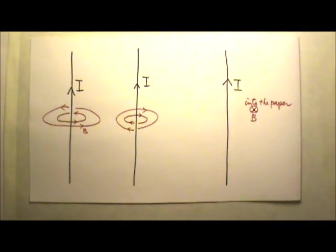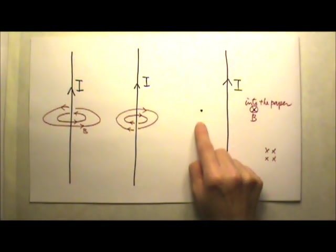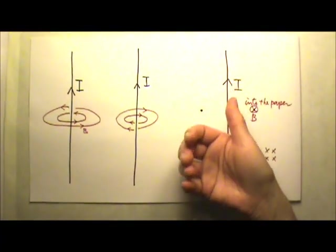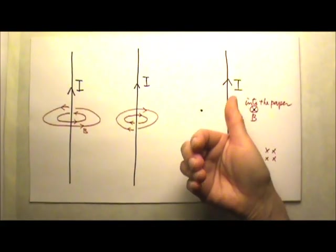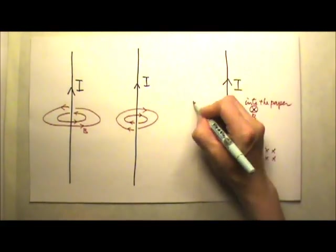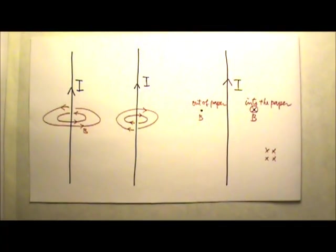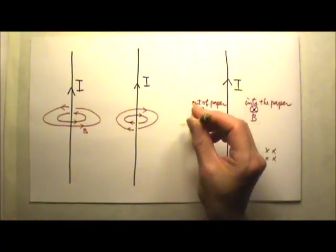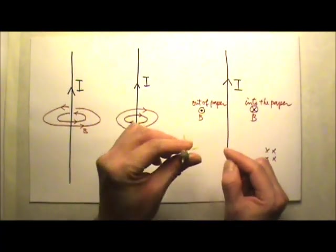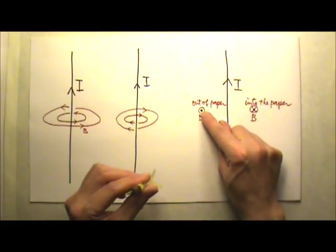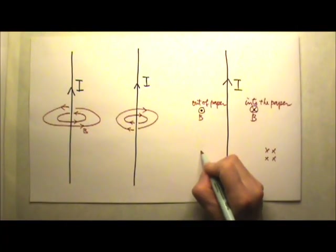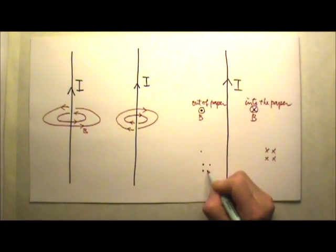Sometimes people draw the X with a circle around it; sometimes just X's without circles. For the direction on the left side of the current, we use the thumb to follow the current, and on the left side the forefingers come towards us — out of the paper. For out of the paper, we draw a dot with a circle around it, because if an arrow travels towards us we see the tip, and the dot represents that tip. Sometimes people just draw dots without the circle.